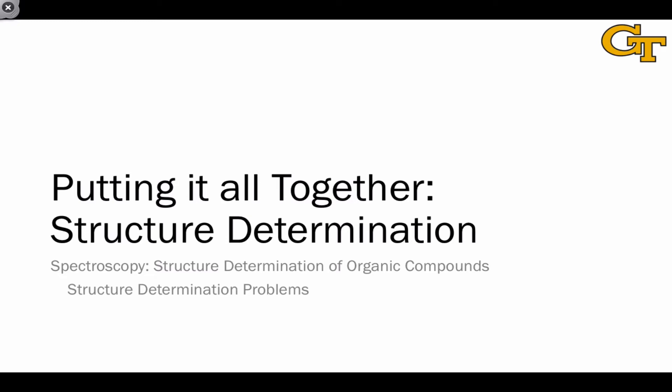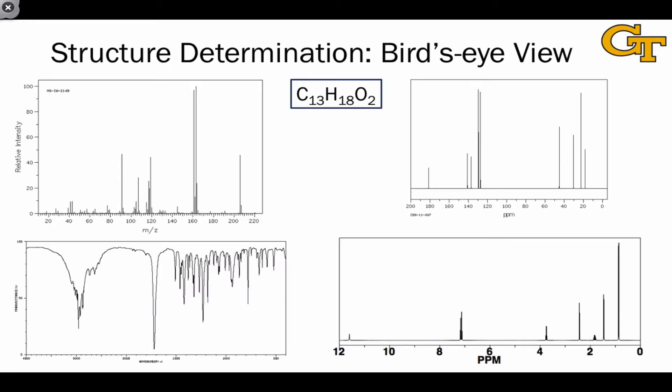In this final video of our unit on spectroscopy, we're going to talk about putting it all together to determine the structure of an unknown organic sample from spectral data. The information at our disposal includes the molecular formula, the mass spectrum, carbon-13 NMR, an infrared spectrum, and a proton NMR spectrum.